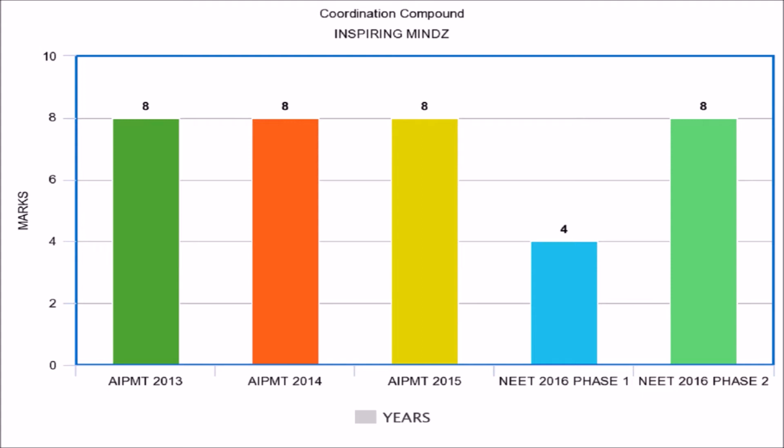For D block elements, the weightage was 8 marks in AIPMT 2014, AIPMT 2015, and NEET 2016 Phase 2, while in NEET 2016 Phase 1 the weightage was 4 marks.